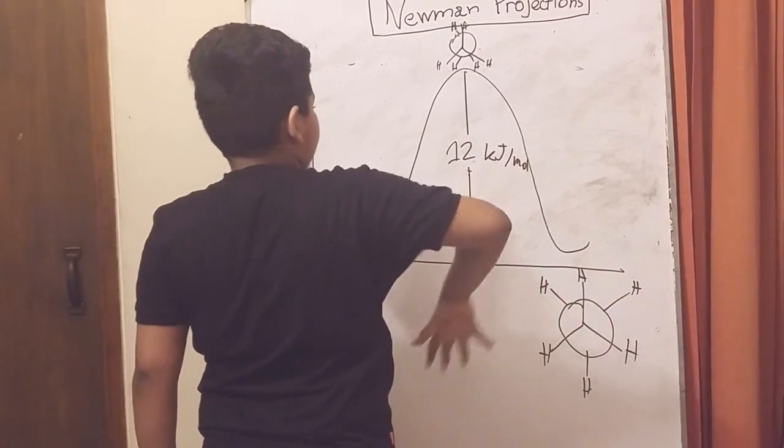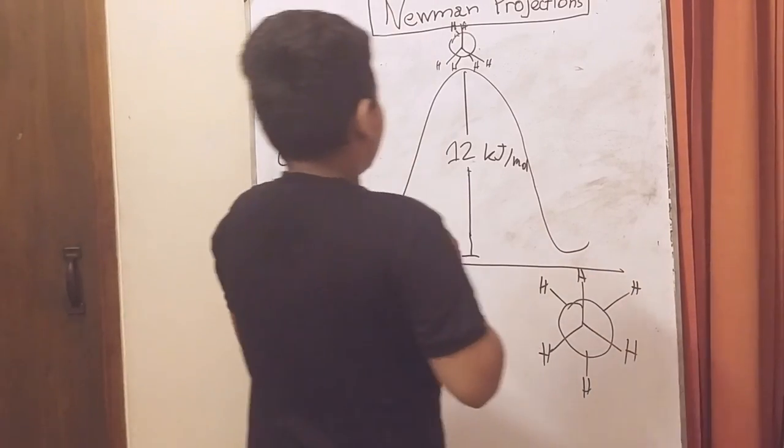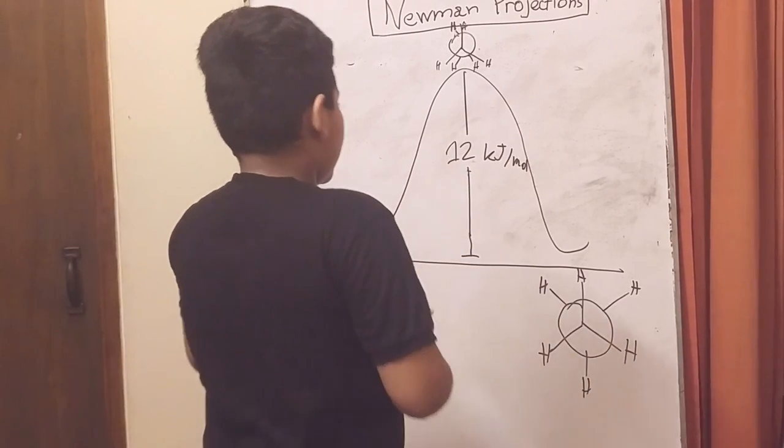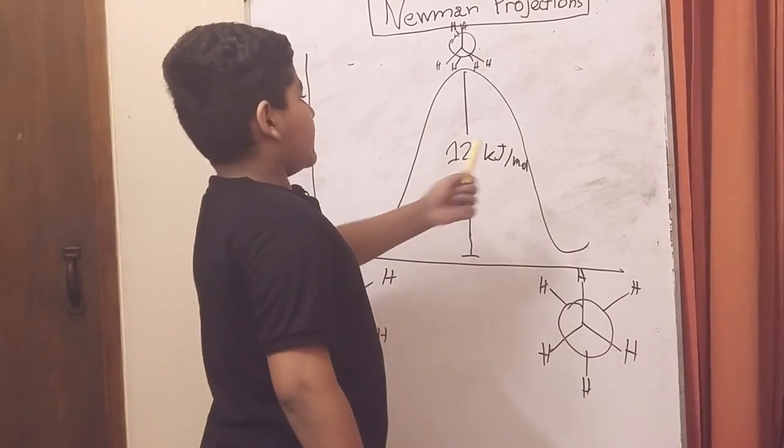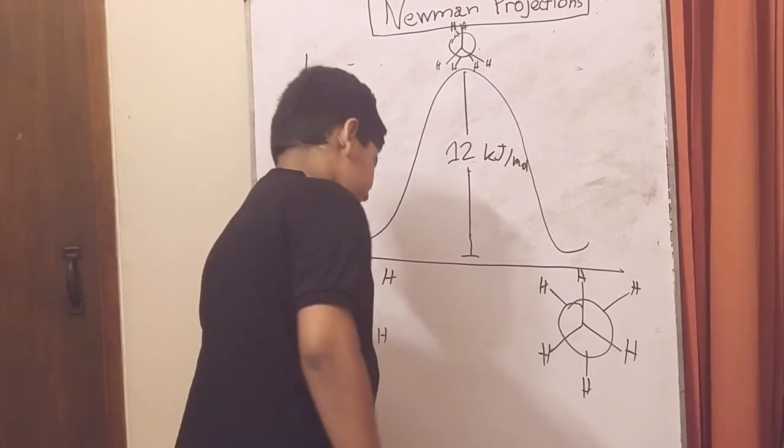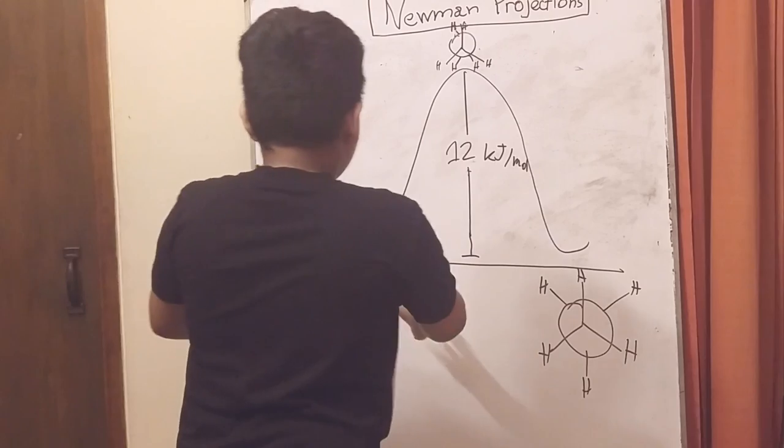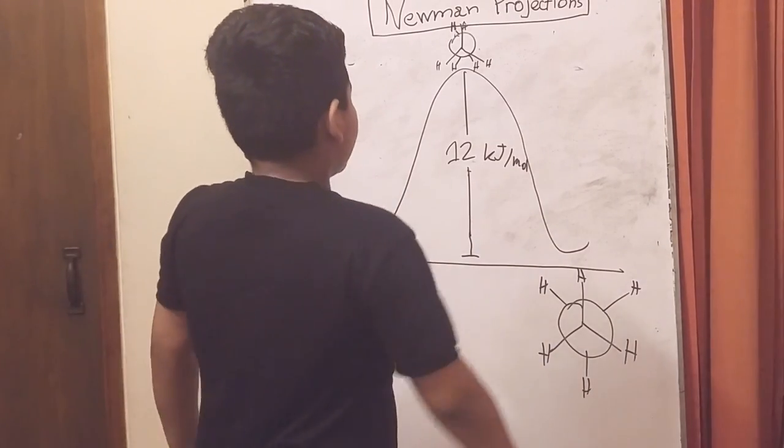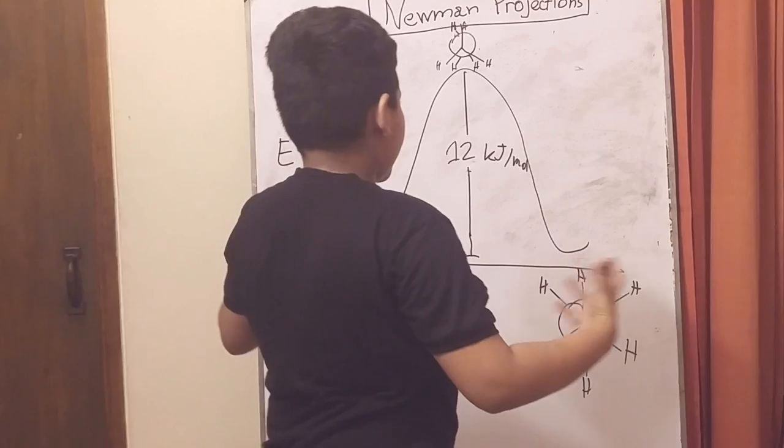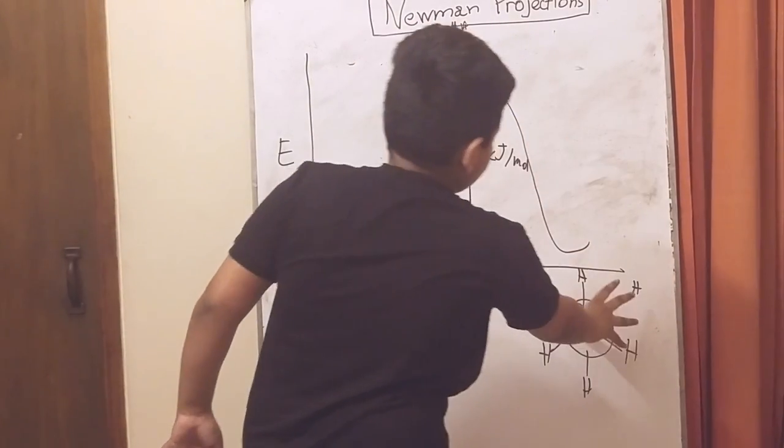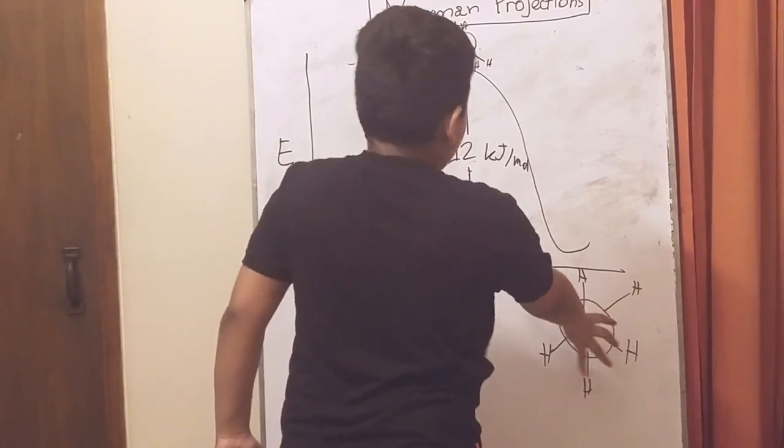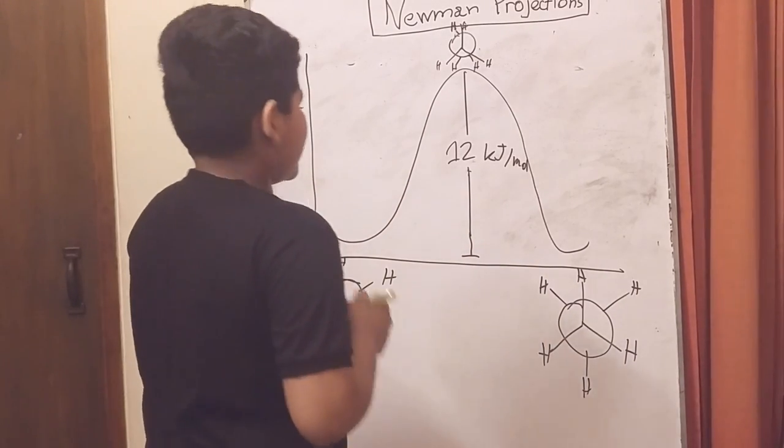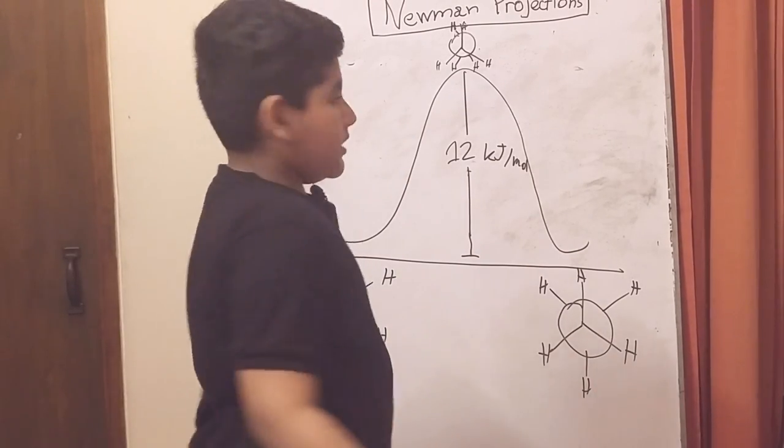There will be an increase and decrease of the energies and we can actually calculate these energies. If we have one mole, then there will be 12 kilojoules of difference for each energy. It will be normal like this, then it's going to increase by 12 kilojoules per mole because all the bonds are much closer, and we'll get more energy. It's going to rotate back to its original eclipsed form. That's how you draw a Newman projection for ethane.